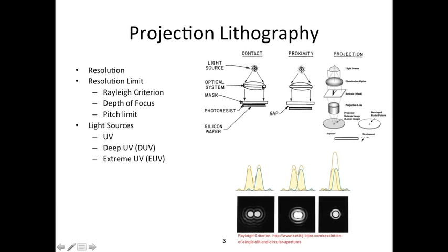In contact printing, you have a light source and an optical system — not just one lens but a couple of lenses working together — which focuses light on your silicon wafer coated with photoresist. You put your mask on top and expose it with light. The light passes through the transparent areas of the mask and exposes the photoresist. It's called contact printing because there is no gap between the photoresist or wafer and the mask.